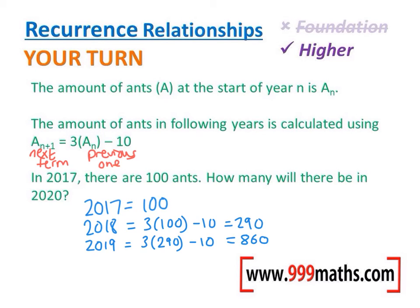And finally let's do 3 lots of the previous one for 2020, and then subtract 10 from our answer to give us our overall answer, which is 2570. And that's the answer to this question.